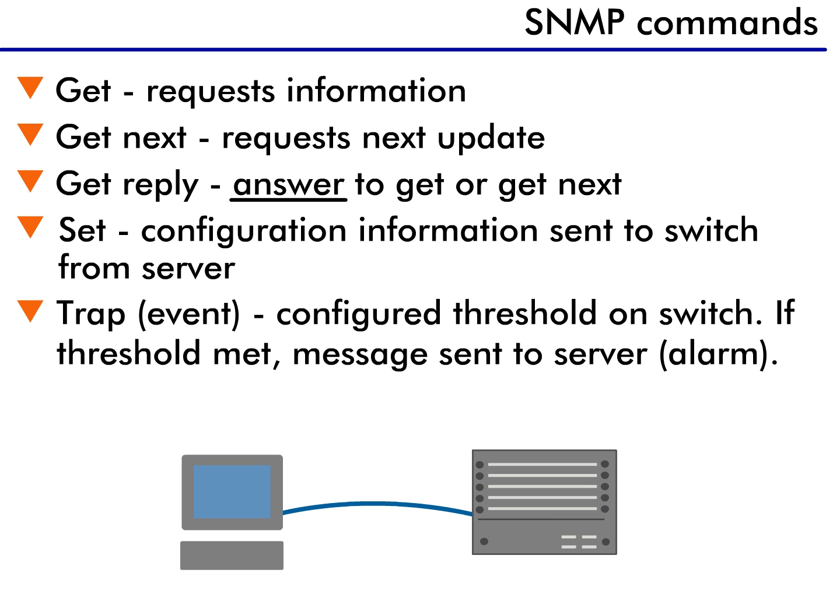Another command is GET NEXT. This is almost identical to the GET command, except it does not want the current value of the identified file — it wants the next incremental value. For example, one file might show the current number of packets received by a port; this is returned in a GET. A GET NEXT waits for the next update and returns that information.